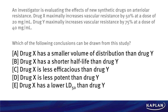You'll see answer choices here dealing with pharmacokinetics and pharmacodynamics — basic pharmacology you need as background knowledge. Choice A says Drug X has a smaller volume of distribution than Drug Y. Choice B says Drug X has a shorter half-life than Drug Y. Choice C says Drug X is less efficacious than Drug Y. Choice D says Drug X is less potent than Drug Y. And Choice E says Drug X has a lower LD50 than Drug Y. Take a moment, test that pharm knowledge, and get to an answer.